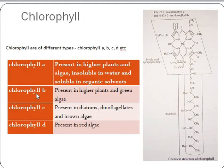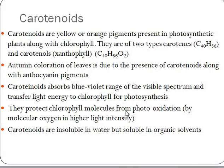There are different groups of chlorophylls: chlorophyll A, B, C, and D. Chlorophyll A and B are present in higher plants and green algae. Chlorophyll C is found in algae, dinoflagellates, and diatoms. Chlorophyll D is present in red algae. Another group of molecules present along with chlorophyll within plastids are carotenoids. Carotenoids are yellow or orange pigments present in photosynthetic plants. The autumn coloration of leaves is due to the presence of carotenoids along with anthocyanin pigments.